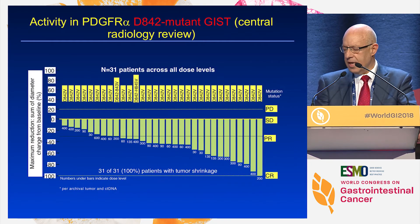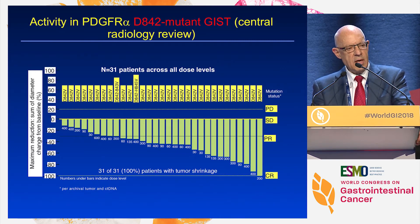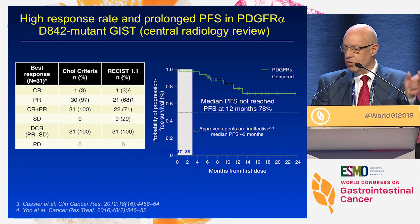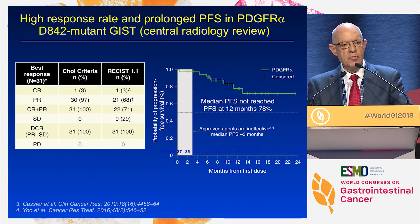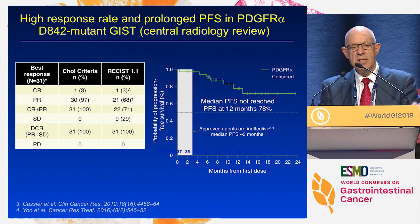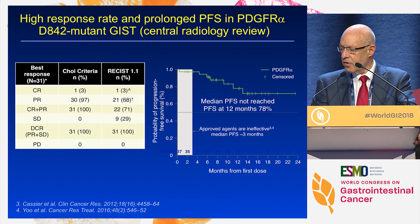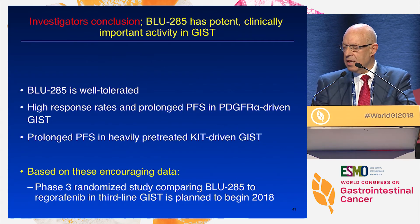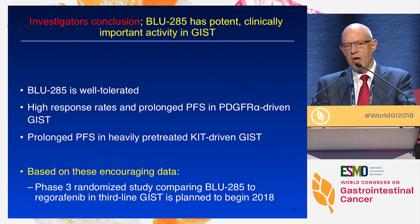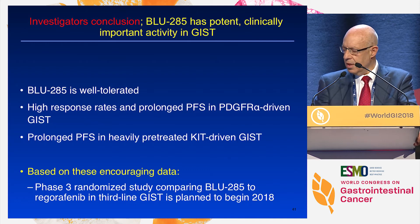This is the waterfall plot for patients with the D842V mutation: using modified response criteria, there was a 100% response rate for this particular group. Looking at the PFS curves, the white bar represents what we would expect with either reuse of imatinib or placebo — and the median PFS is not reached in this D842V PDGFRα-mutant group. The investigators concluded that BLU-285 was well tolerated, with high response rates and prolonged PFS particularly in PDGFRα GIST and also in heavily pre-treated KIT-driven GIST. As a result, a phase three study is planned.